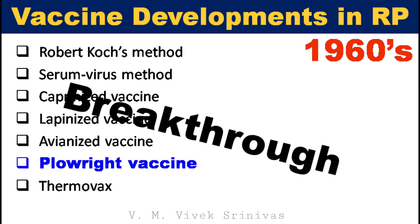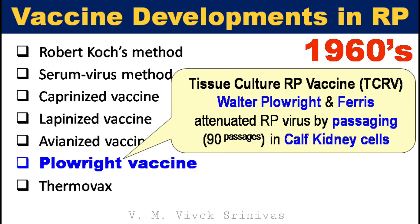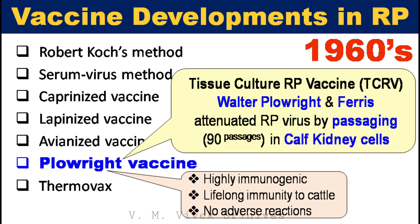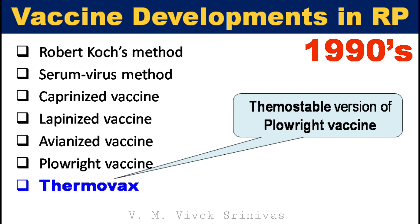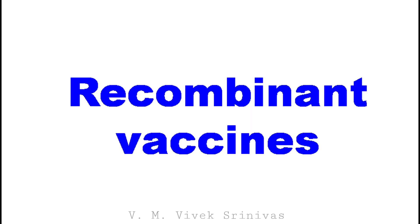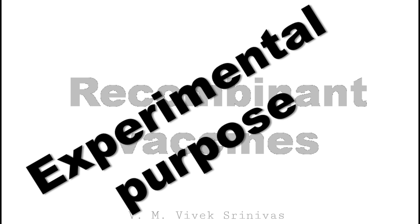Next, the Plowright vaccine — the second breakthrough in history — was the first time a cell culture system was used in Rinderpest vaccine development. Plowright and Ferris attenuated the Kabete O Rinderpest strain in calf kidney cells. A single dose of this vaccine was highly immunogenic and provided lifelong immunity to cattle, with no adverse reactions observed. This vaccine was used worldwide and played a great role in Rinderpest eradication. In the 1990s, a thermostable version of the Plowright vaccine was developed under the name Thermovax. Recombinant vaccines were also developed for experimental purposes, in which the vaccinia virus genome backbone was ligated with the hemagglutinin and fusion genes of Rinderpest virus and expressed.